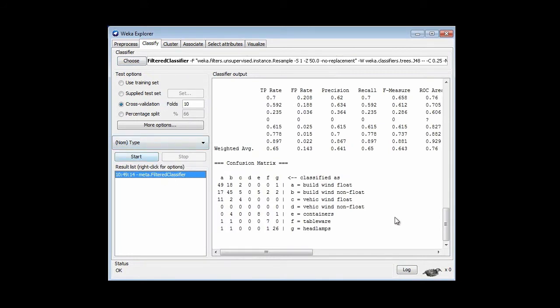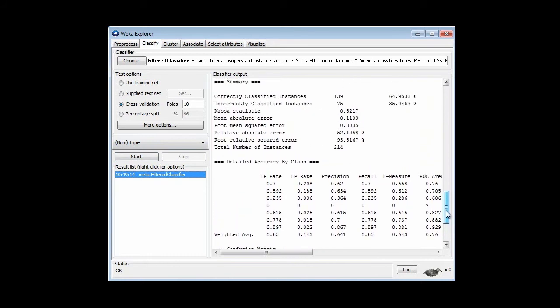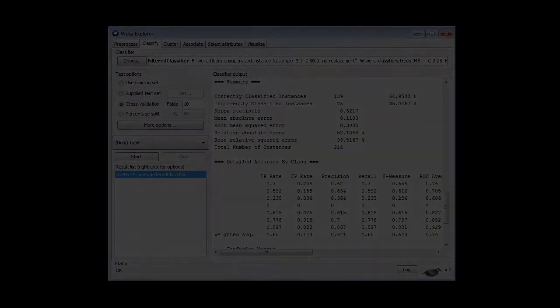So I can go ahead and run that. I'm doing 10-fold cross-validation, sampling the training set, 50% samples of the training set, and leaving the test set untouched, and I get 65% performance here. Back to the slide.